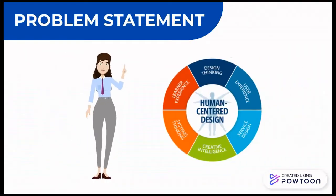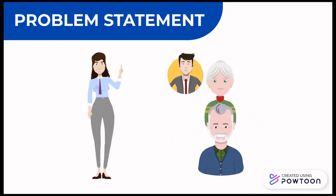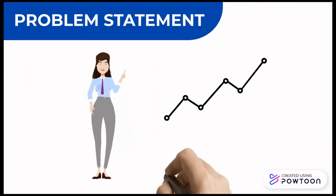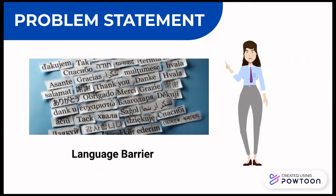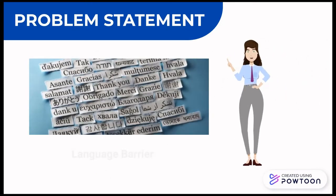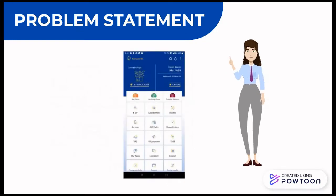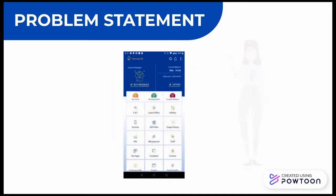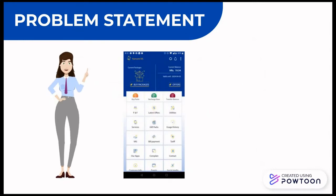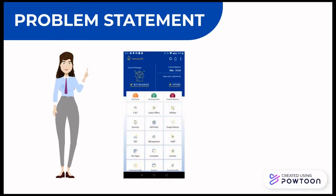UI design plays a vital role. A good design attracts users, which ultimately leads to growth in business. Language has always been the focal point of cultural identity. Localization avoids offending potential users and maintains universal usability. NTC Mobile App is the online platform of Nepal's one of the oldest telecommunication service providers, Nepal Telecom. Although half of Nepal's population uses NTC SIM cards, the population using the app is very low. The reason for this ratio is the bad design and the language barrier.